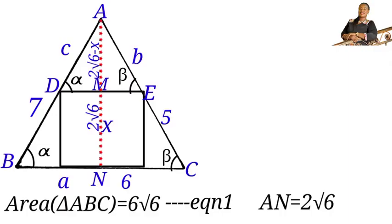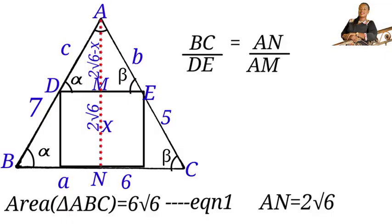Since triangles ADE and ABC have two pairs of equal corresponding angles, the third angles are also equal. Therefore, triangle ADE is similar to triangle ABC. Since they are similar, the ratios of their corresponding sides are equal. We take the ratio of their bases and heights: BC over DE equals AN over AM.